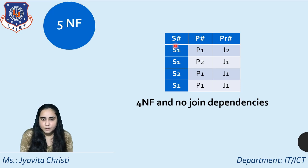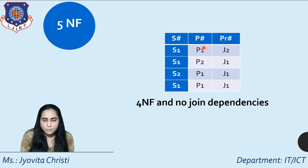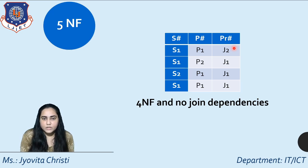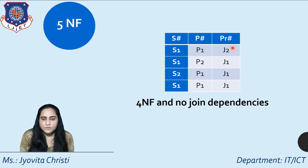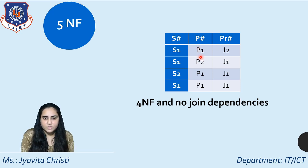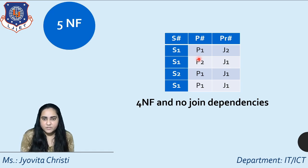The example table for 5NF contains three columns: S# (supplier number), P# (part number), and PR# (project number). It is taken from an auto parts database and tells you which supplier is supplying which part and for which project. There are no functional dependencies in this table, and no multivalued dependencies either, so it is already in 4NF.